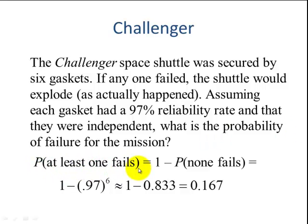The probability that at least one fails is equal to one minus the probability that none of them fail. So none would fail would mean all six are working correctly. So since each one has a probability of 97%, that's going to be 0.97 to the sixth power. We want all six functioning at the same time. So that is equal to one minus 0.833, which is 0.167. The probability that at least one of those gaskets leaking is almost 17%.